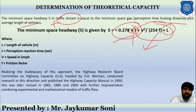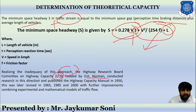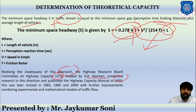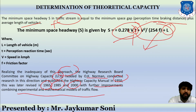Realizing the inadequacy of this approach, the Highway Research Board Committee on Highway Capacity under the US government, headed by O.K. Norman, conducted research in this direction and published the Highway Capacity Manual in 1950. This was revised in 1965, then in 1985, and again in 2000, with further improvements combining experimental and mathematical models of traffic flow.